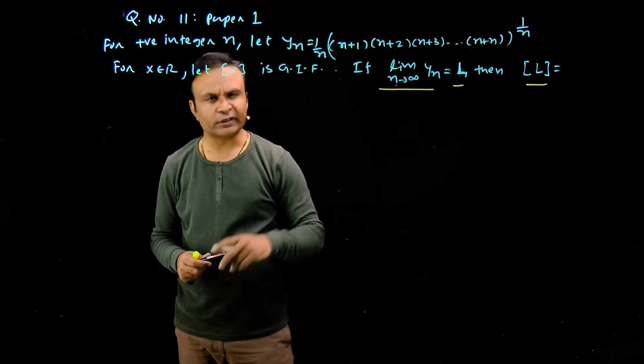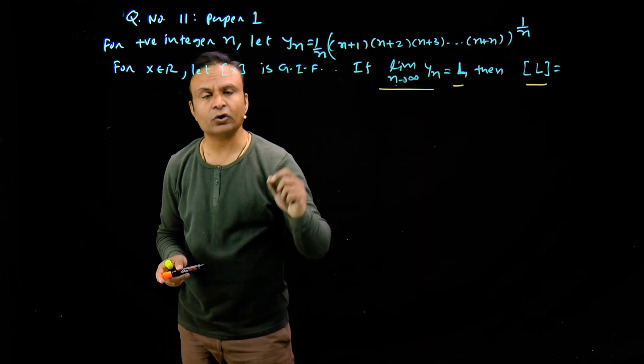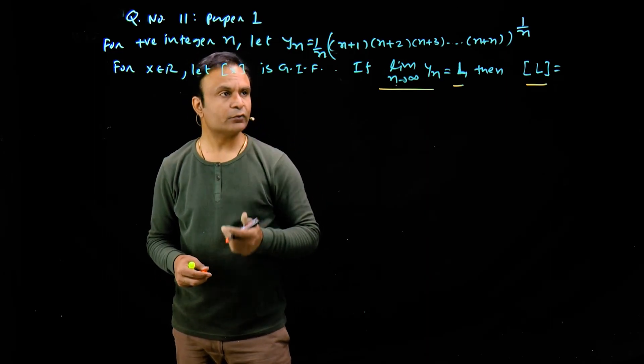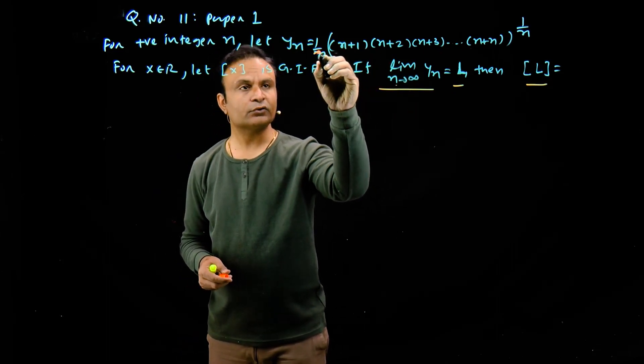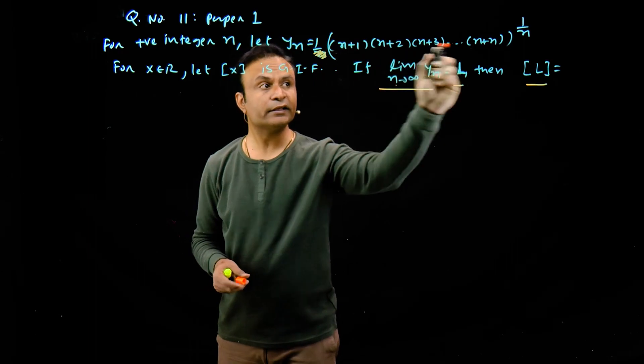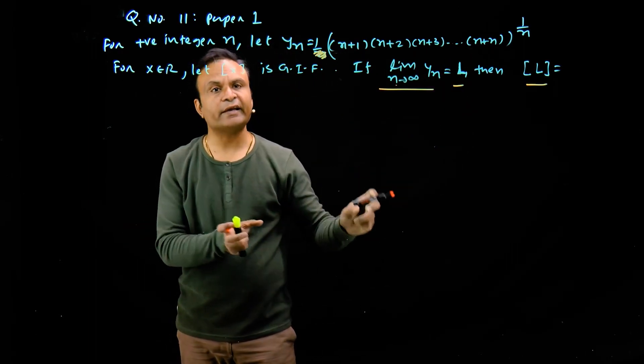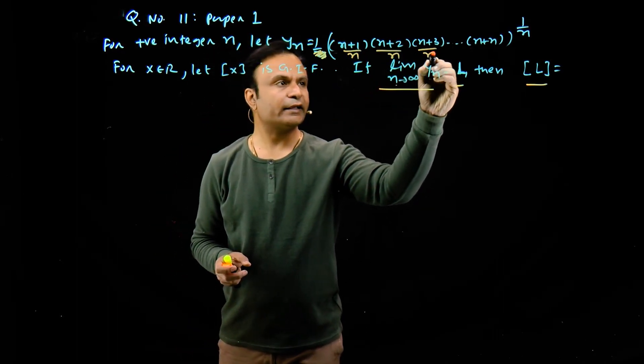Clearly this question is from definite integration, the topic is limit of sum. Before taking the limit, I will take this n inside the bracket. So this n here will be removed and inside will go n power n. And from n power n, I will give n to each bracket, one n to each factor.